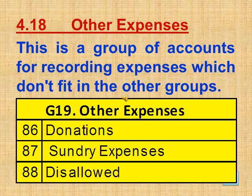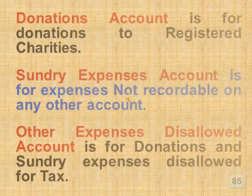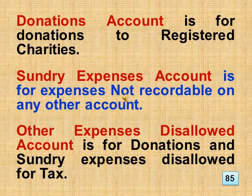Section 4.18 Other Expenses, Group 19. This is a group of accounts for recording expenses which don't fit in the other groups. This includes donations, sundry expenses, plus other expenses disallowed. Donations account covers donations to registered charities. Sundry expenses account covers expenses not recordable on any other account. Other expenses disallowed account covers donations and sundry expenses disallowed for tax.